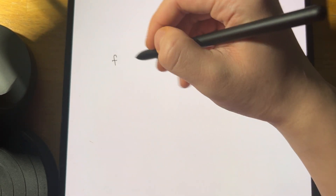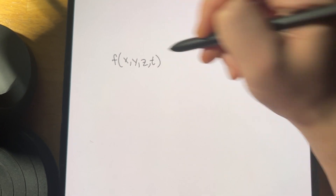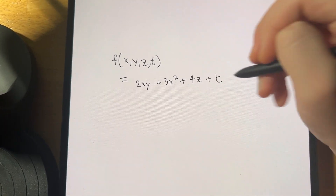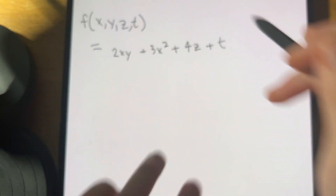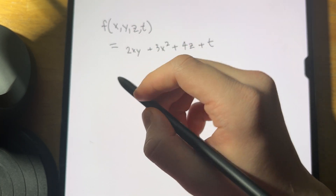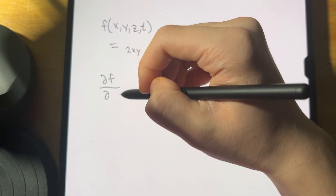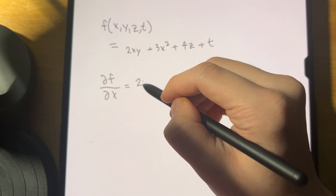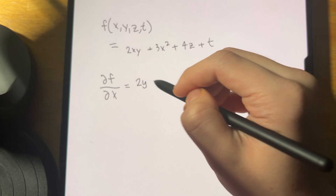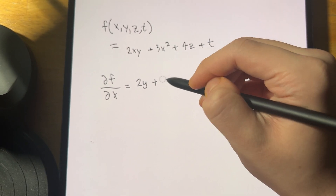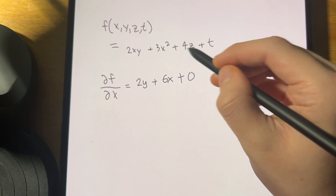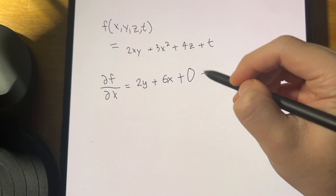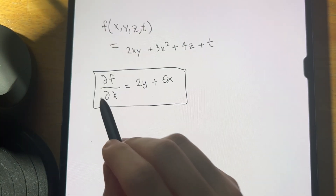Let's do a quick refresher on partial derivatives. Take a function f(x,y,z,t) = 2xy + 3x² + 4z + t. The partial derivative ∂f/∂x is taken term by term: 2xy → 2y, 3x² → 6x, 4z → 0, t → 0, so ∂f/∂x = 2y + 6x. For ∂f/∂y: 2xy → 2x, everything else → 0, so ∂f/∂y = 2x.